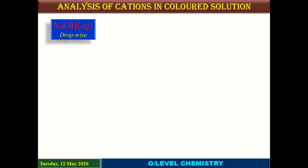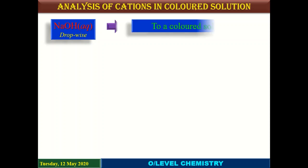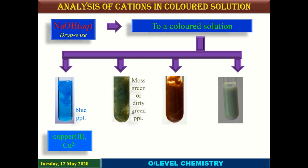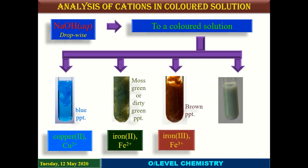We will perform chemical tests for their identification using aqueous sodium hydroxide and aqueous ammonia. On adding aqueous sodium hydroxide, these cations give their own colored precipitates: blue precipitate for copper 2 ions, dirty green or moss green precipitate for iron 2 ions, reddish brown or dark brown precipitates for iron 3 ions, and gray-green precipitates for chromium 3 ions.